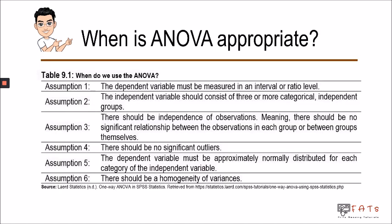So when is ANOVA appropriate? Before we perform Analysis of Variance, we need to make sure that six assumptions are satisfied. Assumption one: the dependent variable must be measured at interval or ratio level — generally, the data collected should be quantitative. Assumption two: there should be three or more categorical and independent groups.